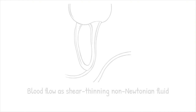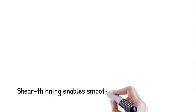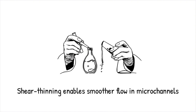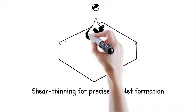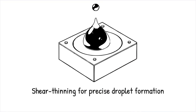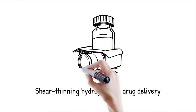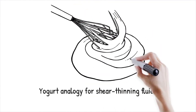Non-Newtonian fluids behave like ketchup — it remains thick in the bottle but flows easily when squeezed, demonstrating how applied force alters viscosity. Shear thinning fluids decrease in viscosity as shear stress increases, facilitating smoother flow through micro-channels. This property is critical for designing drug delivery systems and biomedical diagnostics, where controlled transport and minimal resistance are necessary. The non-linear response of shear thinning fluids can be exploited for precise droplet formation and flow control in lab-on-a-chip devices. Polymer-based drug carriers use shear thinning hydrogels that flow under stress but quickly regain viscosity, ensuring sustained release of pharmaceuticals at target sites.